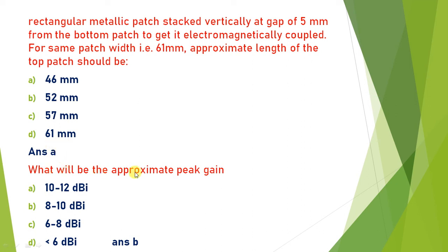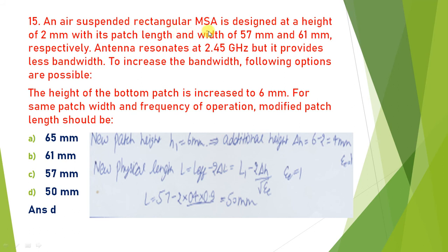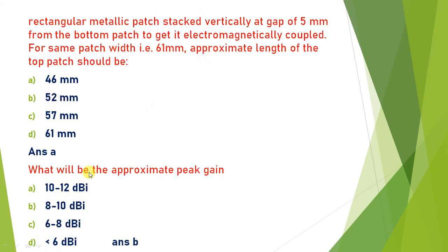The approximate peak gain for a rectangular patch or rectangular cavity is generally between 8 to 10 dBi. Rectangle microstrip antenna always has gain between 8 to 10 dBi. For air suspended rectangle MSA as well, gain is between 8 to 10 dBi. So the answer is B.